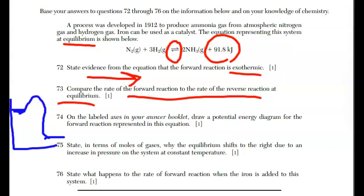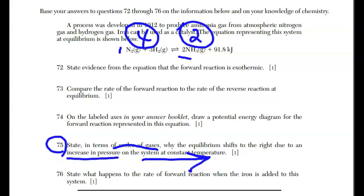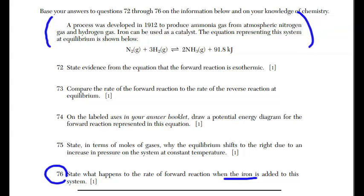For 75, state in terms of moles of gases, why the equilibrium shifts to the right due to an increase in pressure. Let's take a look at that first. I have one in front of nitrogen for the balanced equation, one plus three for the hydrogen. I have a total of four moles of gas on the left. I have a two in front of ammonia, which is a gas, and two moles on the right. The equilibrium is shifting to the right because when I increase pressure, the shift is towards the least number of moles of gas. And that is your answer. For 76, state what happens to the rate of the forward reaction when iron is added to the system. If we take a look at the little reading theory here, we're told iron can be used as a catalyst. And what do catalysts do? They speed up the reaction. They're only asking you about the forward reaction. So the rate of the forward reaction is going to speed up.